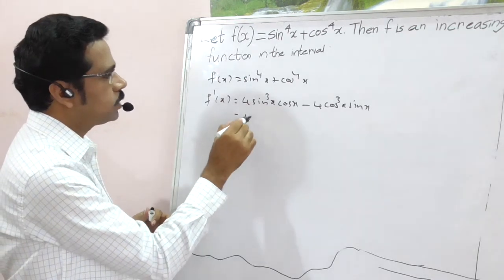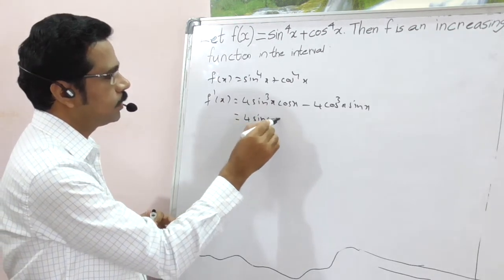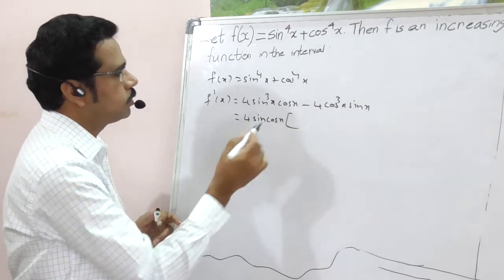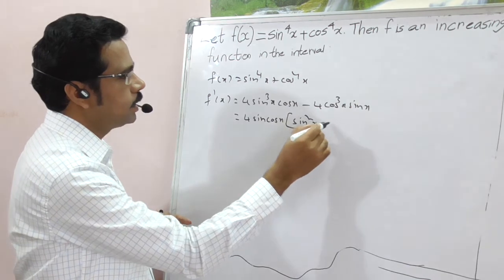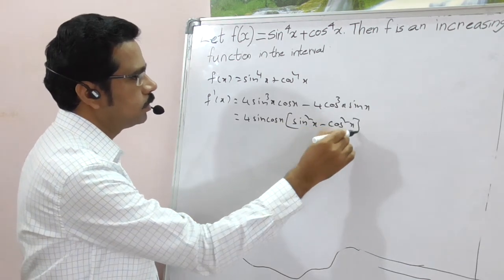So from here, you can take 4sin x cos x as common. Here you get sin²x minus cos²x.